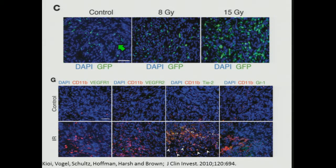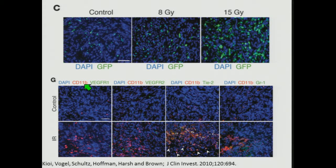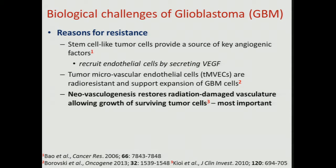They showed this quite eloquently in elegant experiments. They took a regular mouse, bone marrow-transplanted it with green fluorescent protein bone marrow, so you can see the recruitment of cells definitively from the bone marrow — they're green against the blue background for normal cell nuclei. If you irradiate with 8 gray or 15 gray, you can see greater recruitment of these GFP cells originating in the bone marrow. In subsequent panels, they show control animals with no recruitment of bone marrow-derived cells versus irradiated animals where CD11B cells are recruited — TI2 and GL1 cells — indicating they were definitively from the bone marrow. Thus, recurrence following these large single doses or fractionated treatments was driven by neovascularization reflecting the recruitment of bone marrow cells.